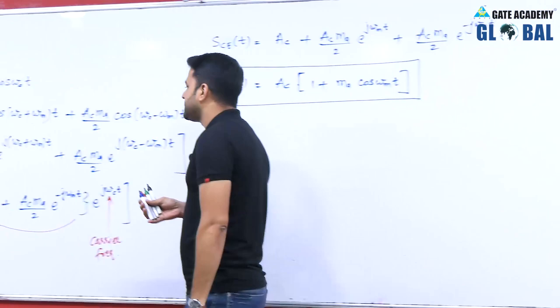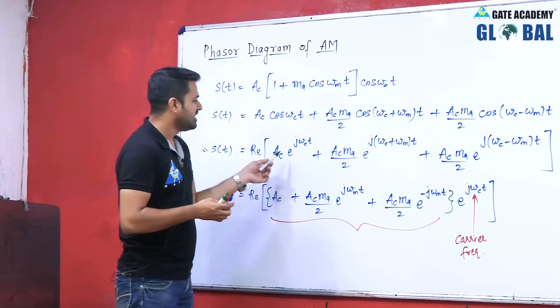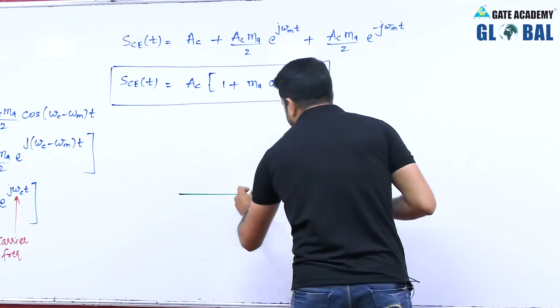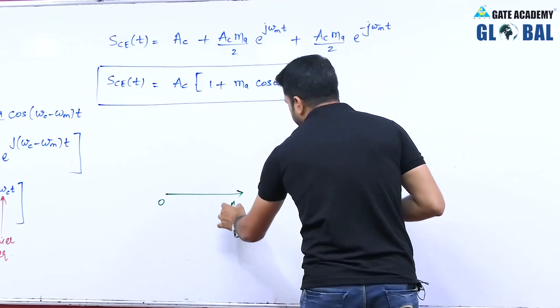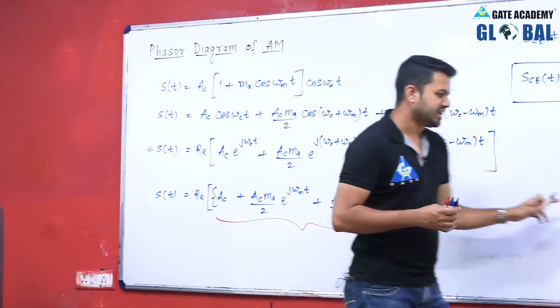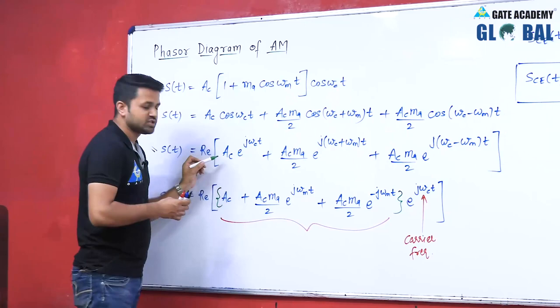Our aim is to draw the phasor diagram. To do so, we take the carrier frequency e^(jωct) as our reference frequency. The first term has amplitude Ac along the reference axis, so the phasor has strength Ac pointing in the reference direction.